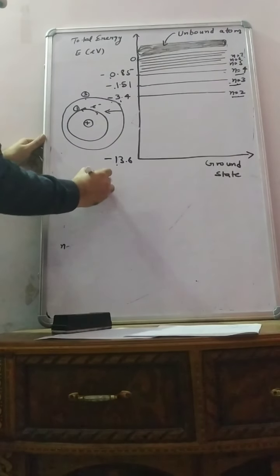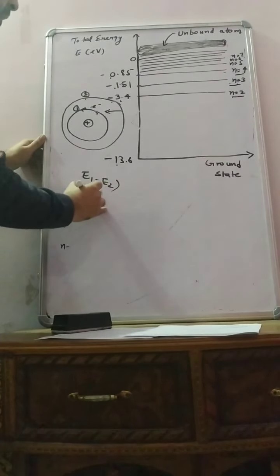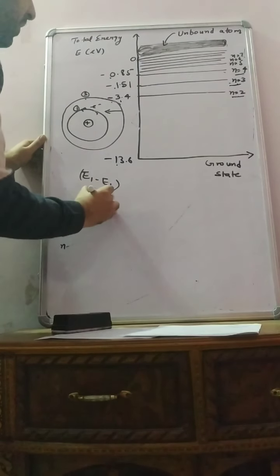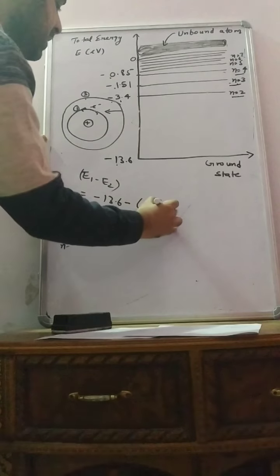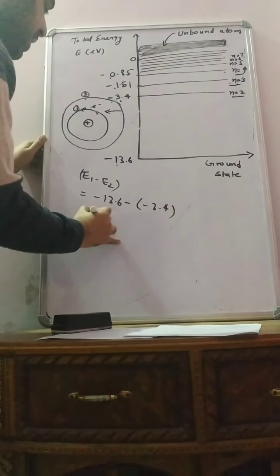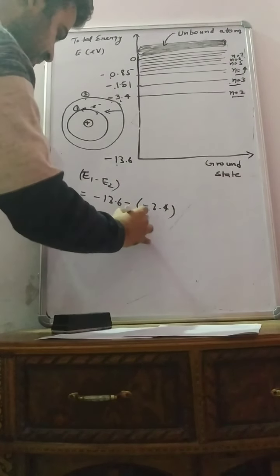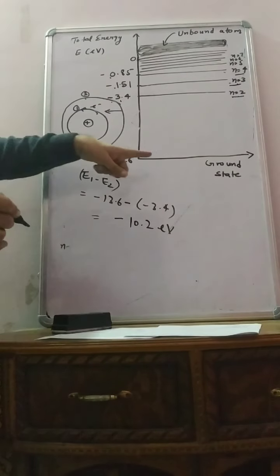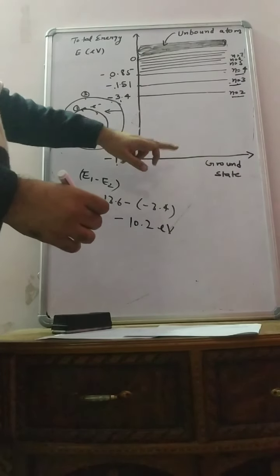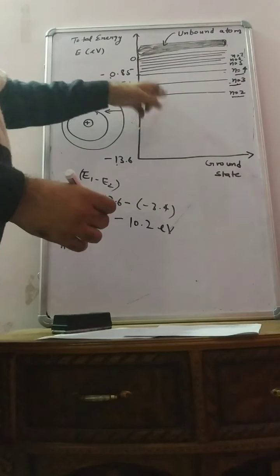That is your E1 minus E2. E1 value is minus 13.6, E2 value is minus 3.4. The value comes out to be approximately minus 10.2 electron volt for releasing an electron to the first excited state.